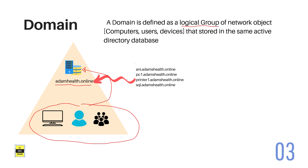For example, adamshealth.online is the domain, and the users, computers, groups, printers, and other devices that belong to adamshealth will be joined to this domain. This information — the objects' information — will be stored in the adamshealth.online database. That is how a domain is formed.